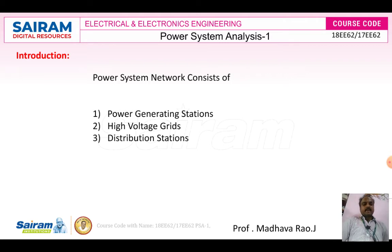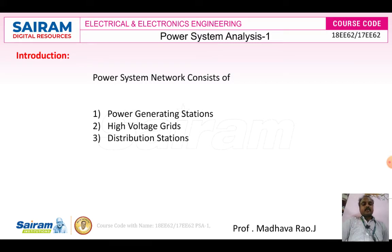Power generating stations include many types: hydroelectric power plant, thermal power plant, nuclear, solar, wind, tidal, geothermal, and biogenetic power plants. Using those power plants we generate the power, and after generating the power we need to transmit it and distribute it to the consumers or load centers.